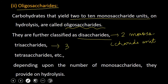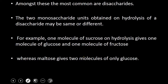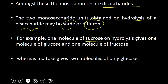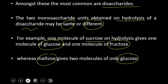Trisaccharides give 3 monosaccharide units, tetrasaccharides give 4 monosaccharide units. Among these oligosaccharides, the most common are disaccharides. The 2 monosaccharide units obtained on hydrolysis of a disaccharide may be the same or different. For example, 1 molecule of sucrose on hydrolysis gives 1 molecule of glucose and 1 molecule of fructose, whereas maltose gives 2 molecules of glucose.